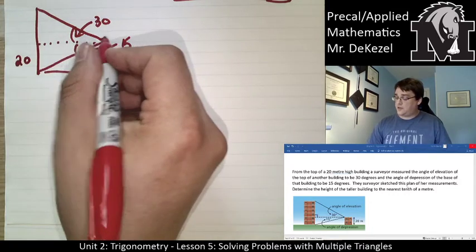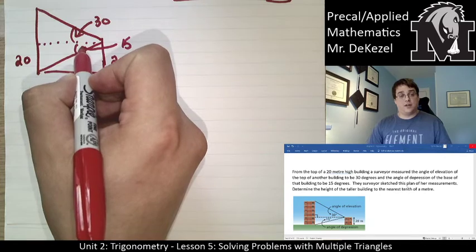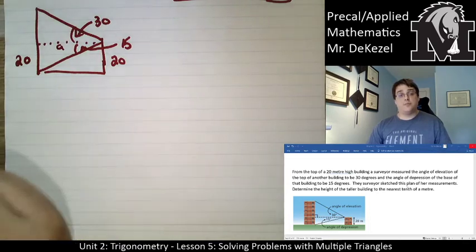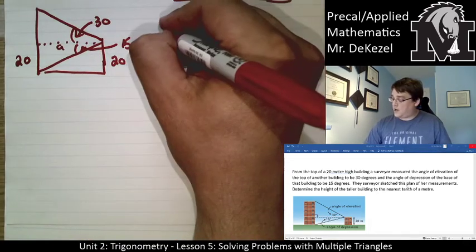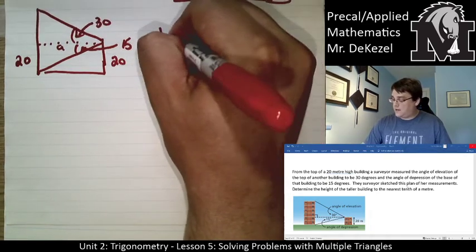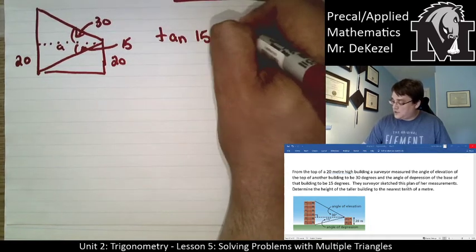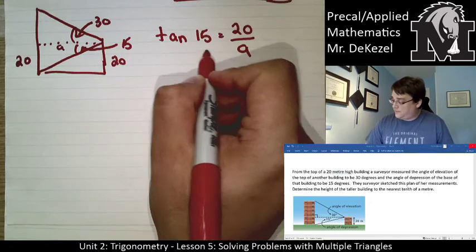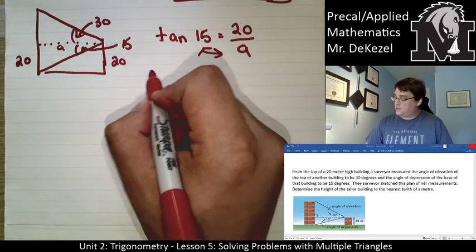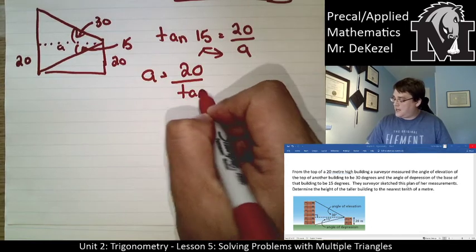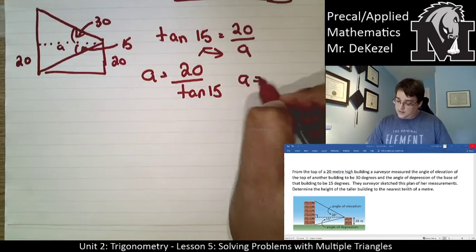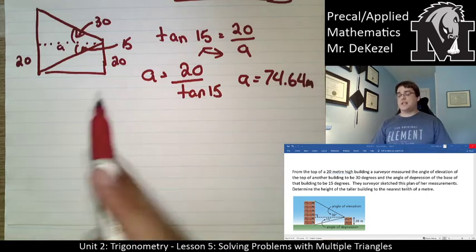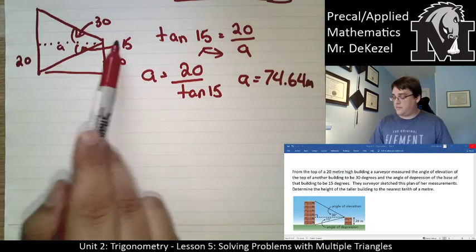The shared dashed line is the horizontal distance between the two buildings. From the 15-degree angle of depression, opposite is 20 meters and the adjacent is A — that's opposite over adjacent, so we use tangent. Tan of 15 equals 20 over A. Rearranging, A equals 20 divided by tan of 15, giving A equal to 74.64 meters. That's both the distance between the buildings and the shared side of this triangle.